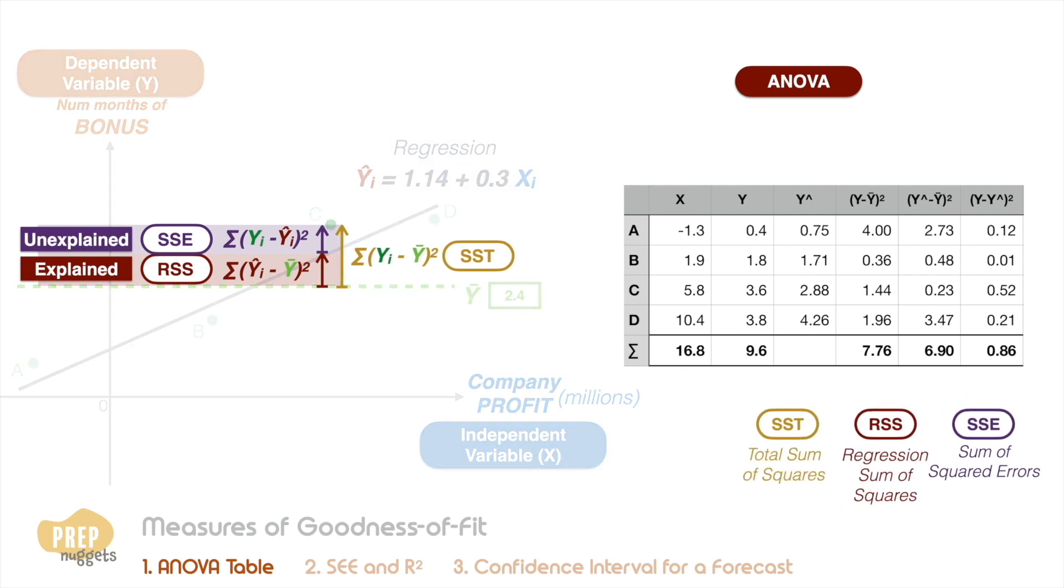So we've learned the SST, RSS and the SSE. Can you see the relationship between them? Quite clearly, the SST is equal to the RSS plus the SSE, which you can verify numerically here. The intuition here is that the total variation is the sum of the explained variation and the unexplained variation.